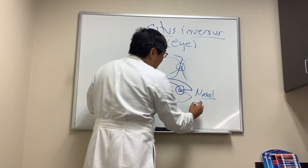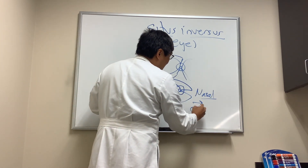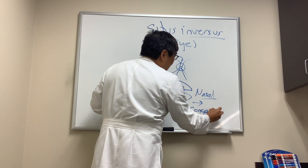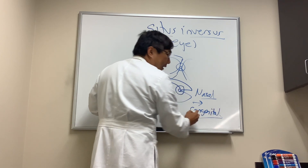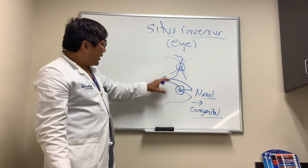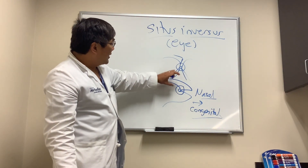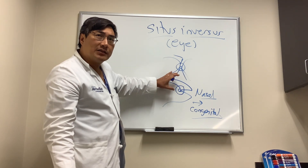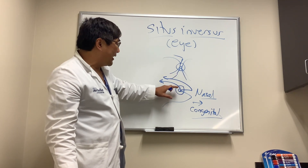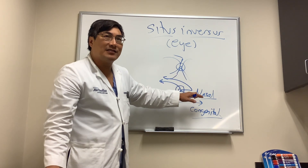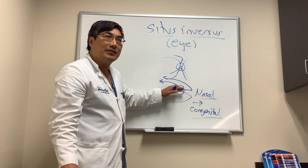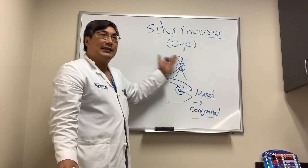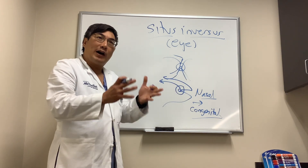This is important because situs inversus has to be congenital — it cannot be acquired. We can change the number and caliber of blood vessels, but what you can't change is the direction. You really can't make blood vessels go nasally and then temporally on an acquired basis.